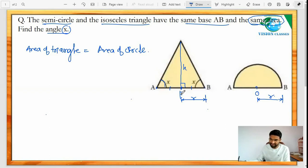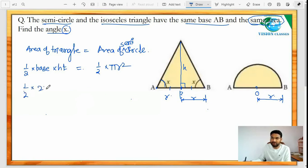Now area of triangle is half of base times height, right? And area of semicircle is one half times π r². So in the triangle, our base is 2r, so we will write here one half times 2r times height is equal to one half π r². Now...